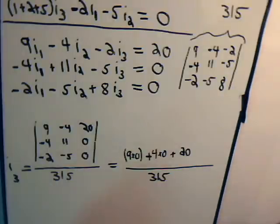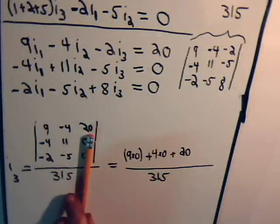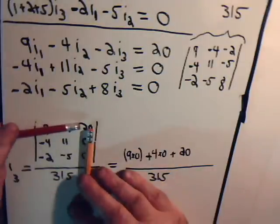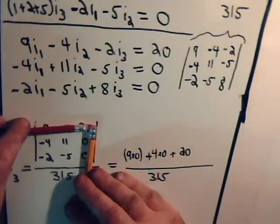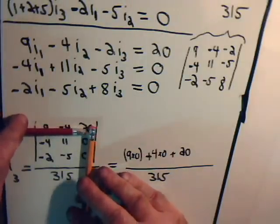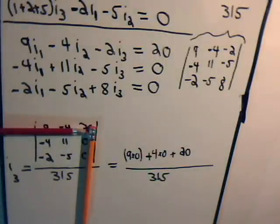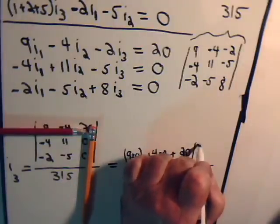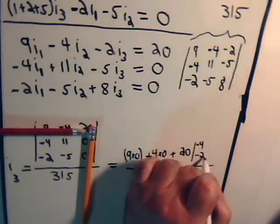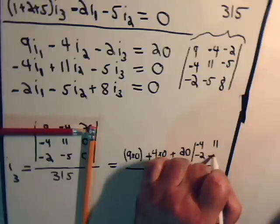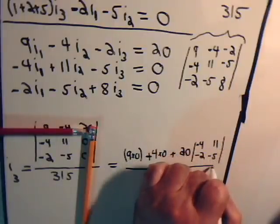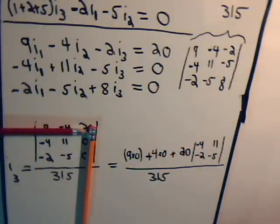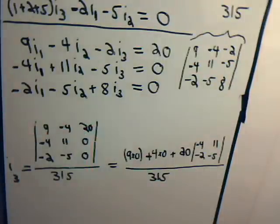Now, let's see what we have. Cover up the column and cover up the row. Minus 4, minus 2, 11 minus 5.